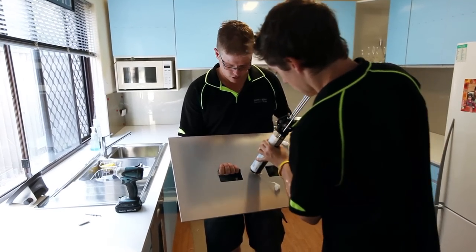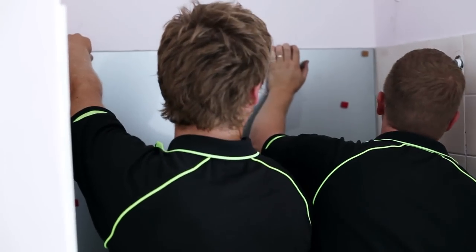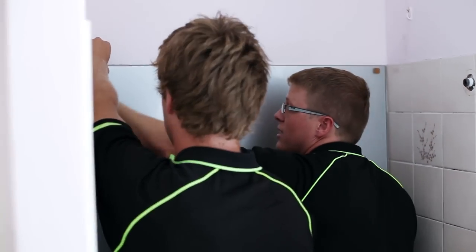Because once it's stuck on the wall, it's not coming back off. It's stuck there. We use the proper silicone that adheres to the wall and it will be staying there for as long as the kitchen's in there. It's not coming back off.